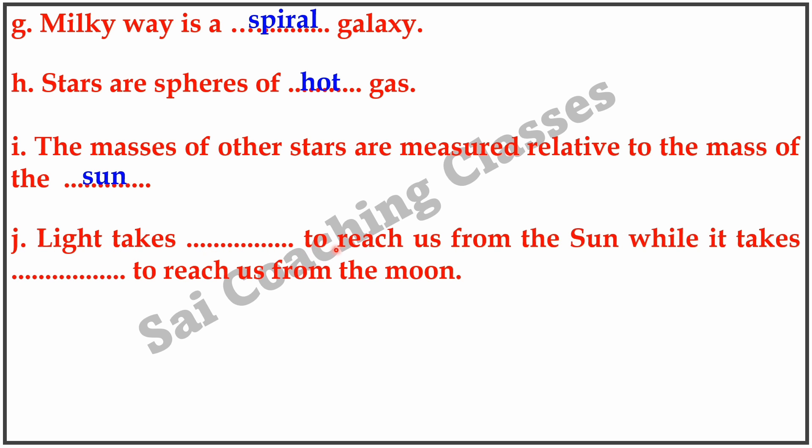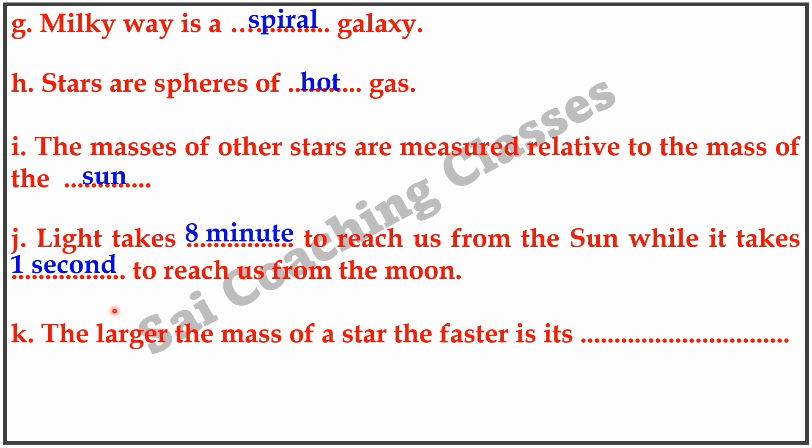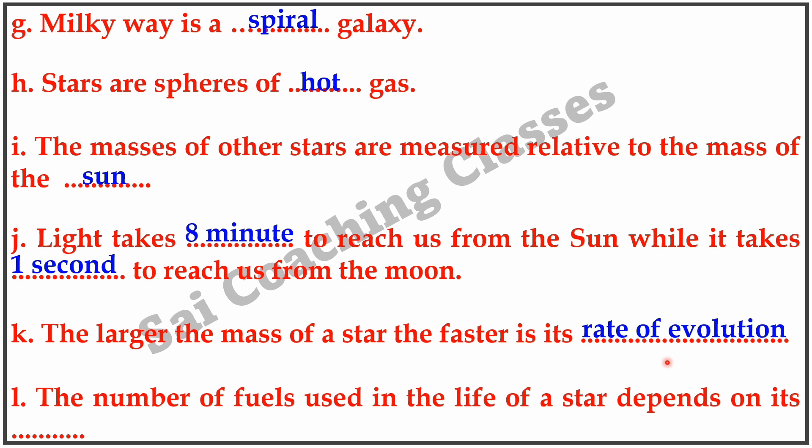J. Light takes 8 minutes to reach us from the sun while it takes 1 second to reach us from the moon. K. The larger the mass of the star, the faster is its rate of evolution. L. The number of fuels used in the life of a star depends on its mass.